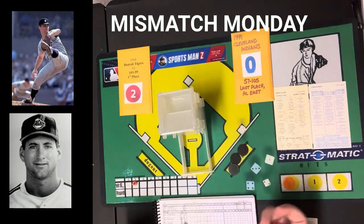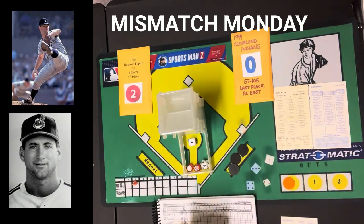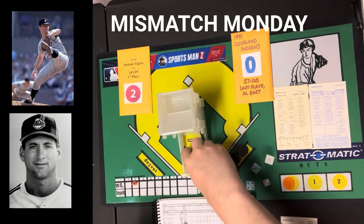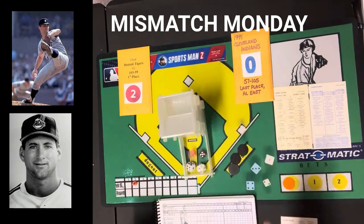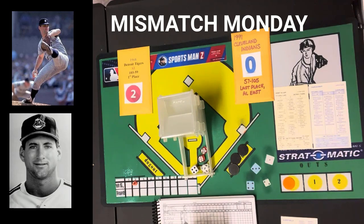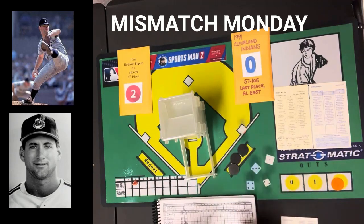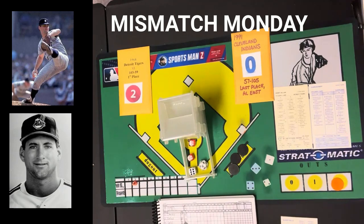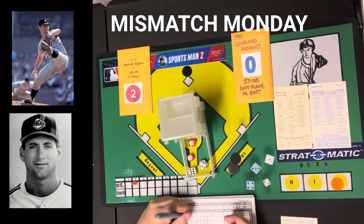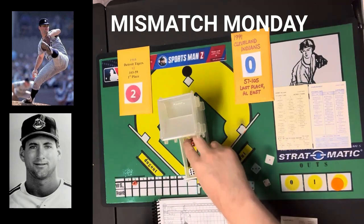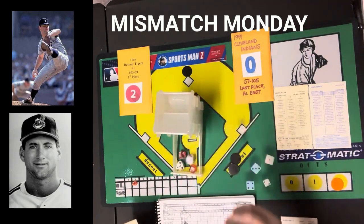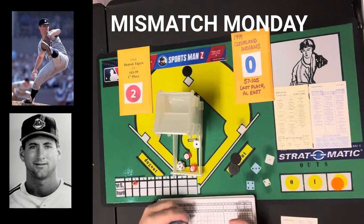Top of the second: Don Wert faces Nagy, gets a 1-9 — strikeout, the first of the game. Dick Tracewski gets a 4-11 — ground ball to the first baseman, two down quickly. Mickey Stanley, back at the top of the lineup, gets a 6-10 — a double. But Al Kaline gets a 1-8, ground ball to short, out 6-3. Tigers don't score.